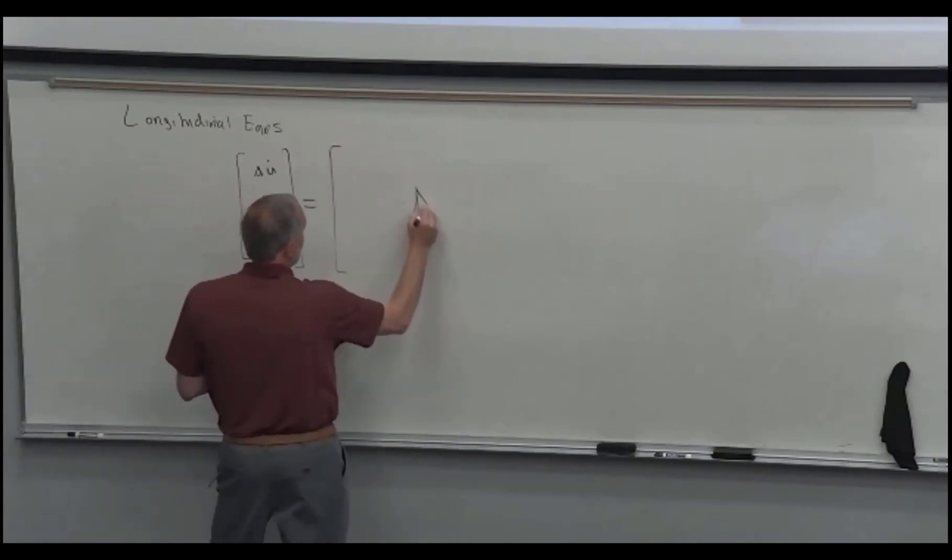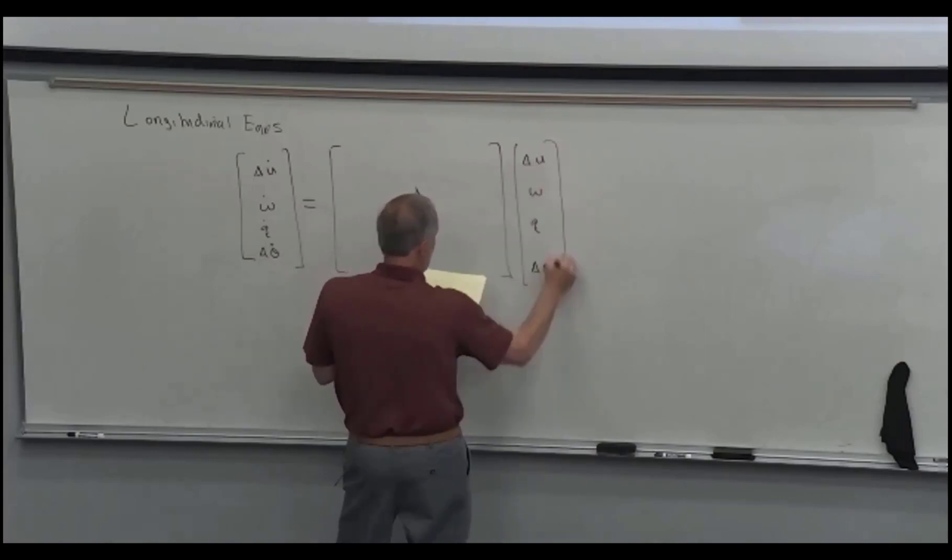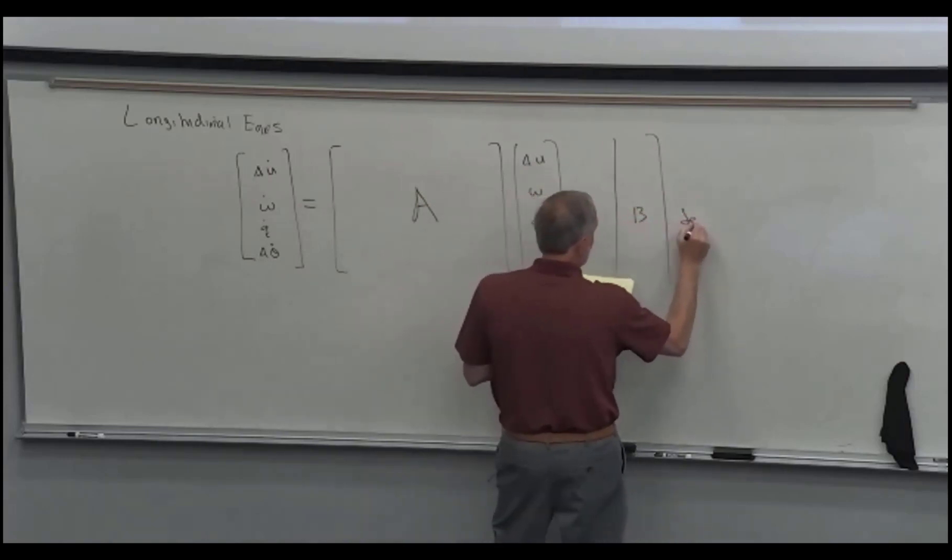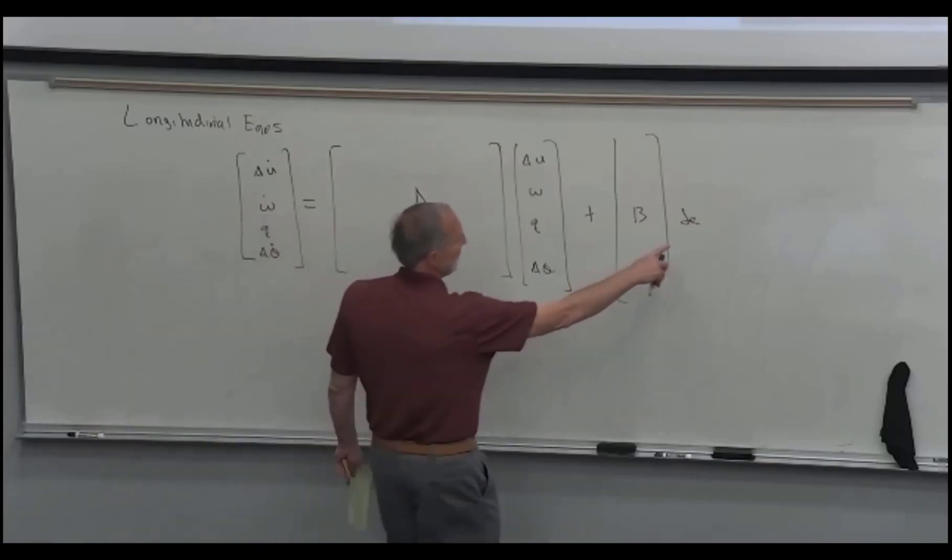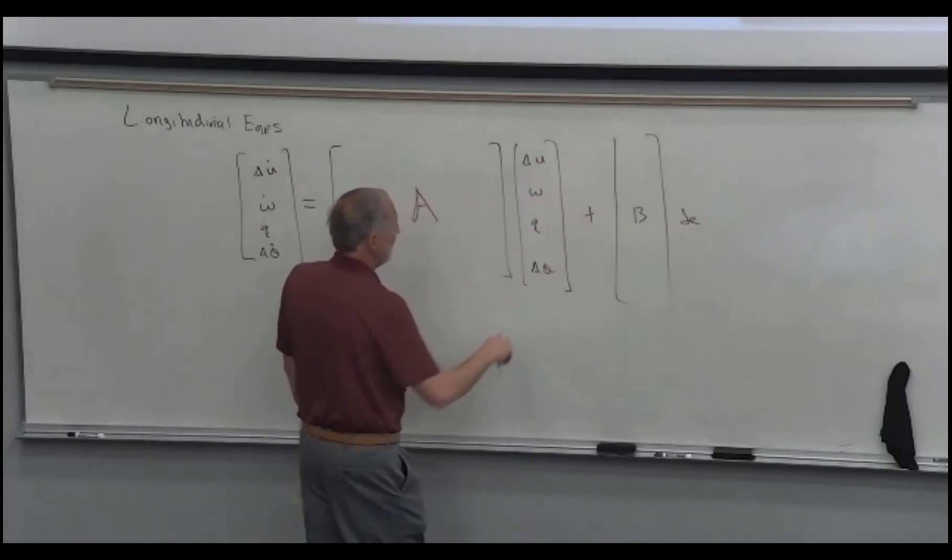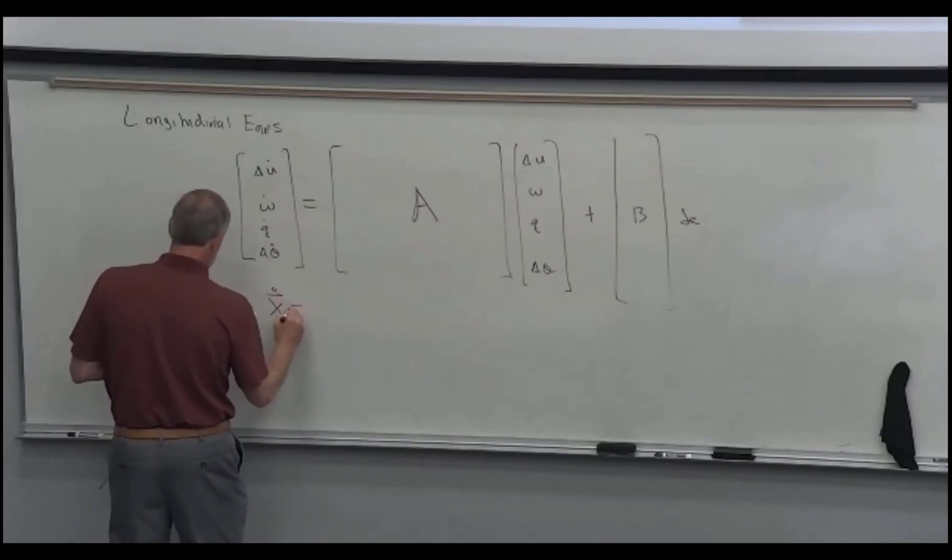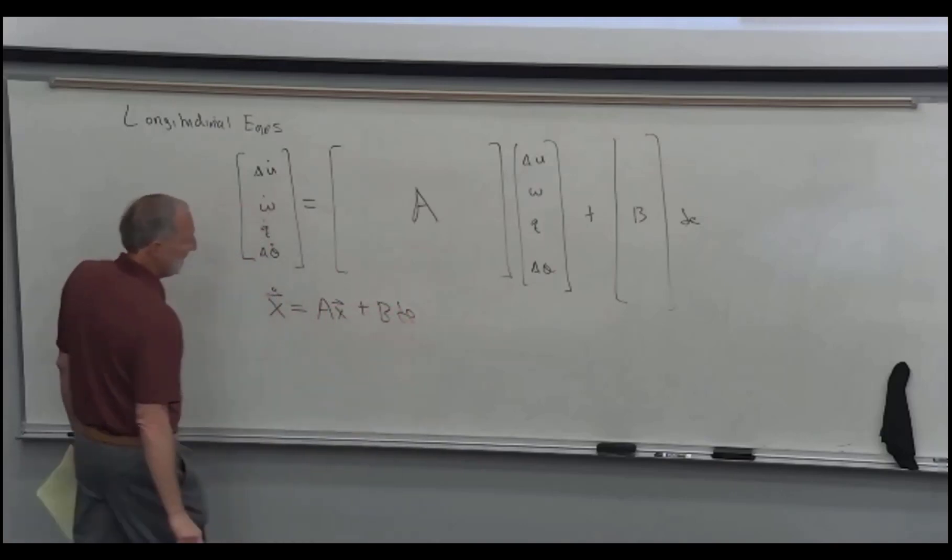That's equal to this matrix we call the A matrix, and then a B vector or B matrix. In this case it's just an elevator. If you have multiple inputs like lateral directional, we'd have aileron and rudder, so you'd have a two column matrix. This is the input, like the force on the mass spring damper system. These are the motion variables in the form of a vector dotted matrix times that vector, plus B times delta e.